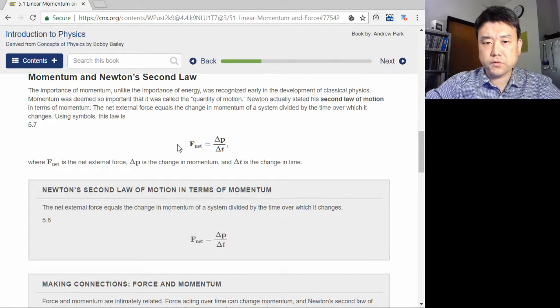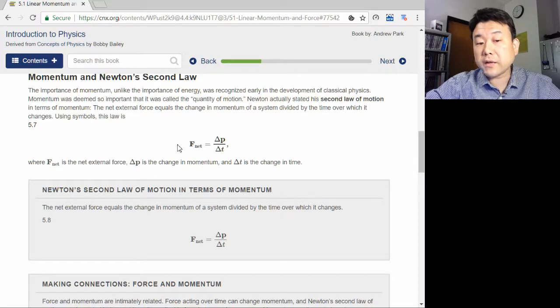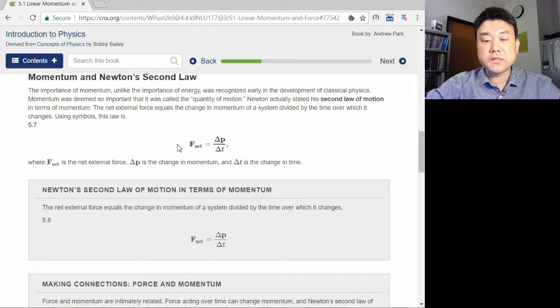In those cases, the first statement we introduced in chapter 3 is wrong. The correct statement is the second one. Net force is given by how quickly momentum changes.